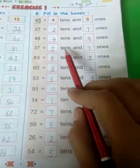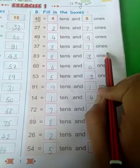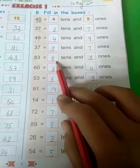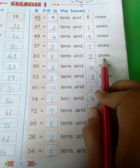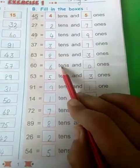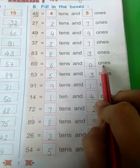37, 3 tens and 7 ones. 83, 8 tens and 3 ones. 60, 6 tens and 0 ones.